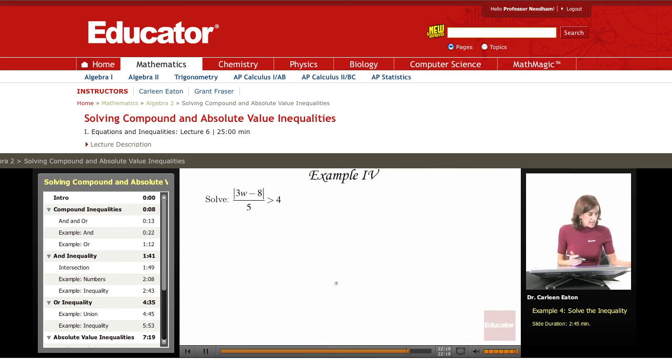An absolute value inequality, and this one is in the form the absolute value of x is greater than n in this general form, which can be rewritten as x is greater than n or x is less than negative n.